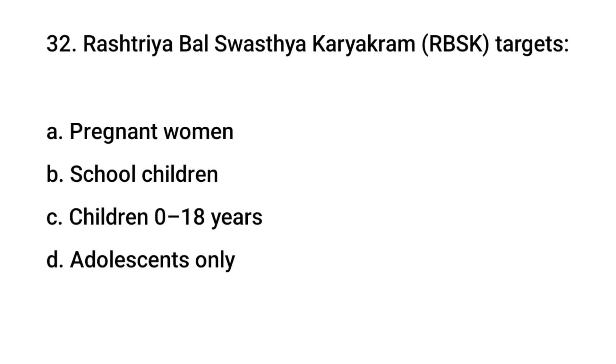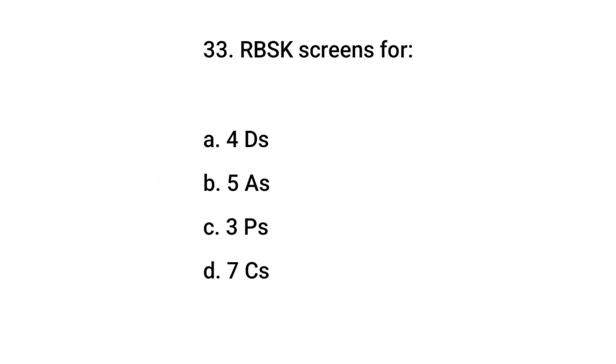Question number 32: Rashtriya Bal Swasthya Karyakram targets — the right answer is C: Children 0 to 18 years. Question number 33: RBSK screens for — the right answer is A: Four Ds. Question number 34: The four D's include — the right answer is A: Disease, deficiency, disability, developmental delay.